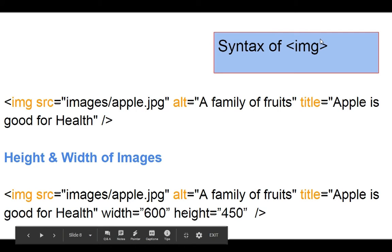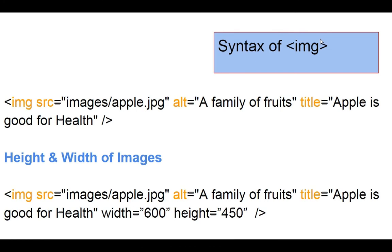To summarize the important things about the image tag: 'src' is where you identify the location of the image; 'alt' is used to give information about the image and also helps the SEO of the website; and 'title' provides more information if you want to describe more about the image.